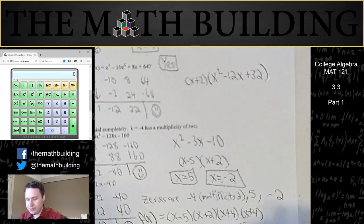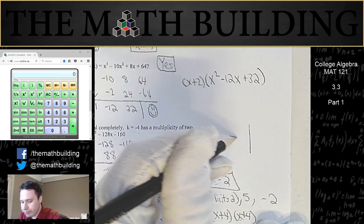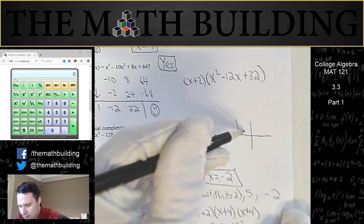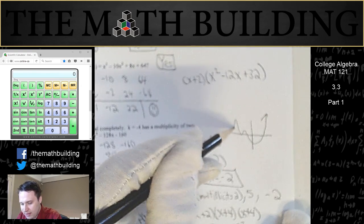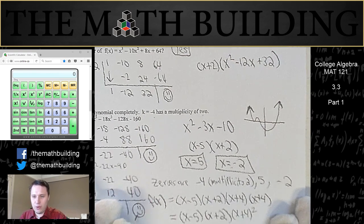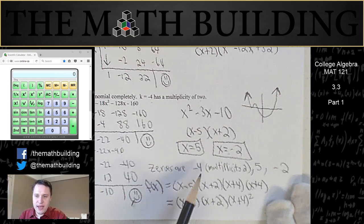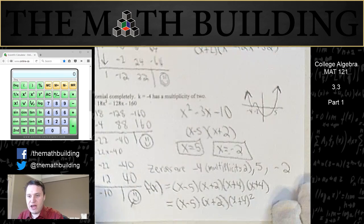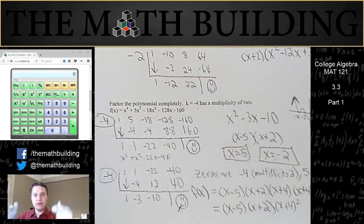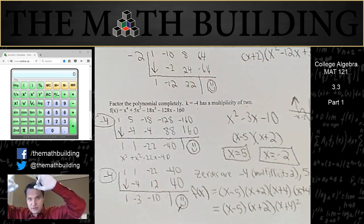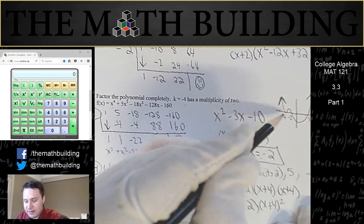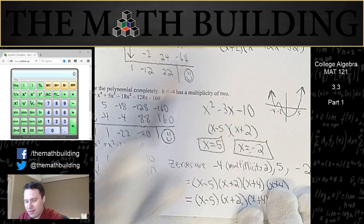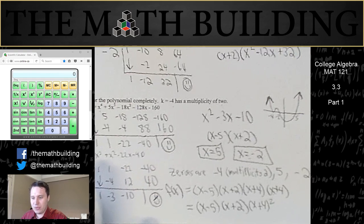Let me show you one last thing before we move on. If I were to graph this equation, the graph would look something like this. These zeros — 5, negative 2, and negative 4 — are where the graph hits the x-axis: at negative 4, negative 2, and 5. Since it's positive x to the 4, the graph opens up like a parabola. If the multiplicity is even, we bounce off the x-axis; if it's odd, we go through it.